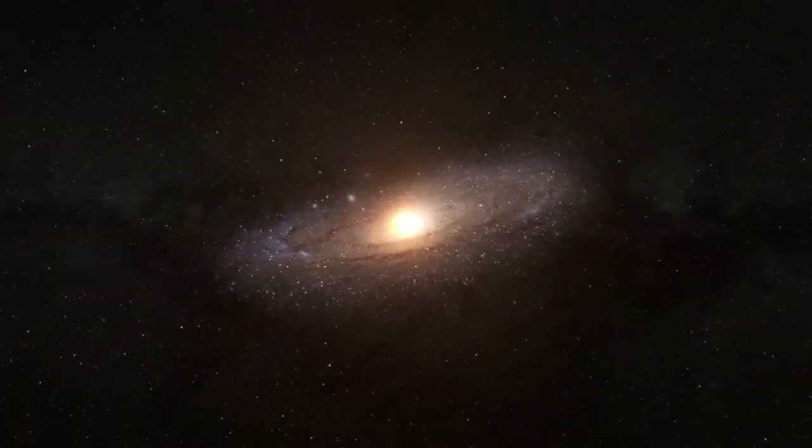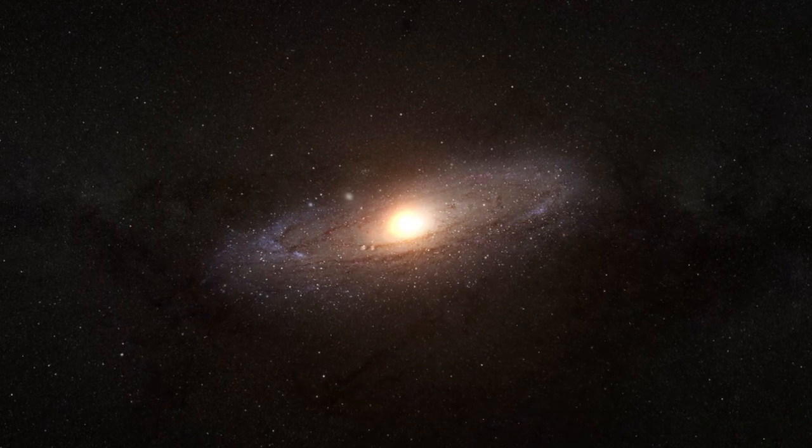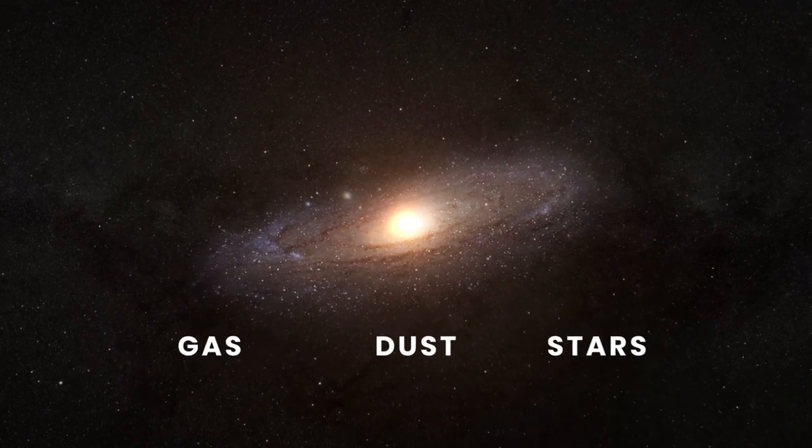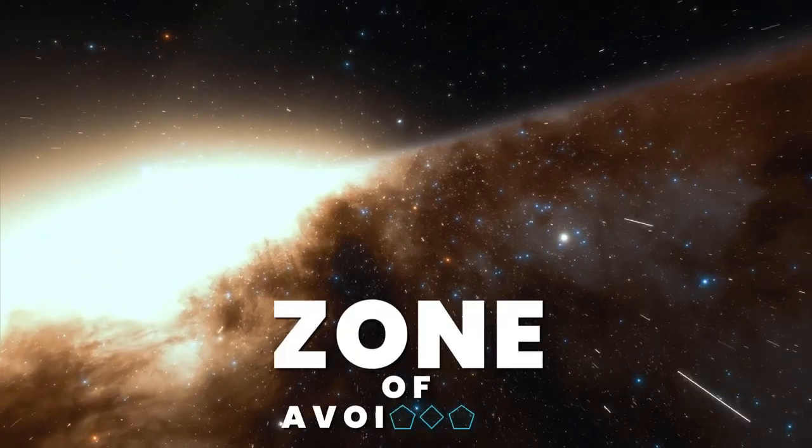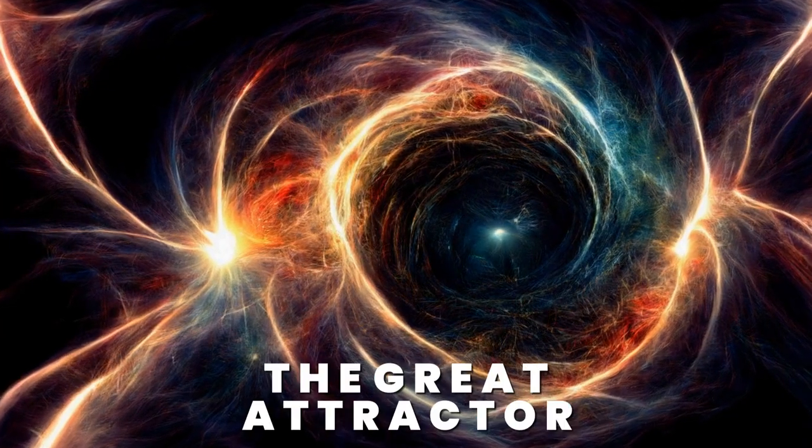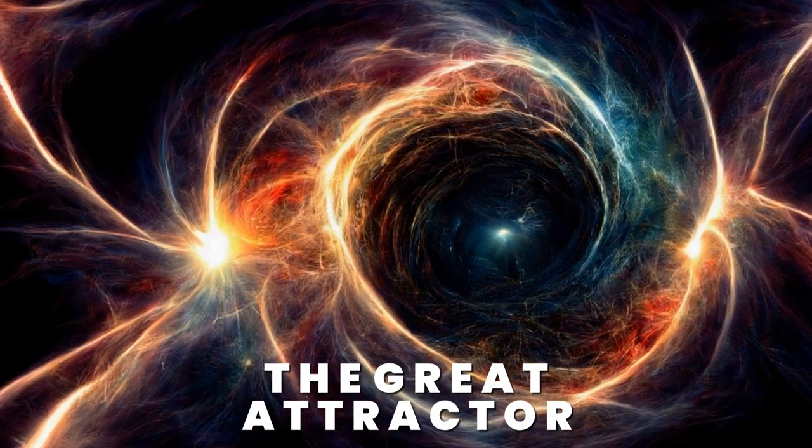On that side of the Milky Way, the disk of our galaxy, which is full of gas, dust, and stars, obscures the view from Earth. Astronomers have called this region the Zone of Avoidance, and something called the Great Attractor sits deep in that zone.